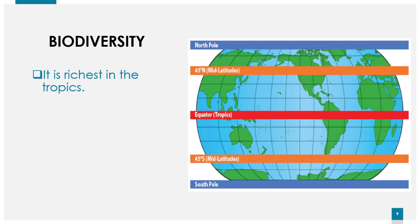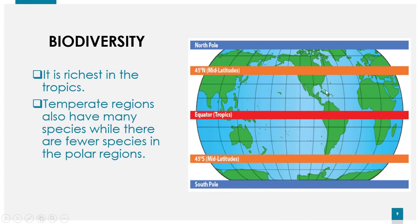Biodiversity is richest in the tropics, which is the region around the equator. The temperate regions, highlighted in orange on your screens, are slightly away from the tropics. There are fewer species in temperate regions as compared to the tropics, both for animals and plants.